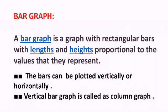What is meant by bar graph? A bar graph is a graph with rectangular bars with length and height proportional to the values that they represent. So in a bar graph there will be two things: one is length, and another one is height.